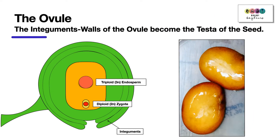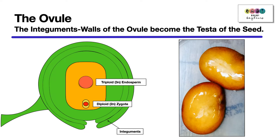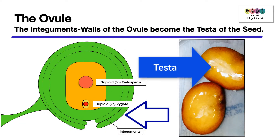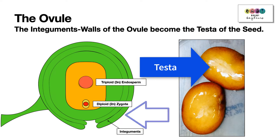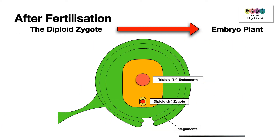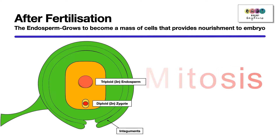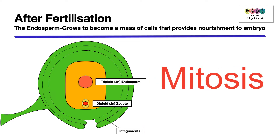Seeds have an outer coating called the testa, and it's the ovule walls — the integuments — that become the testa of the seed. You can see these seeds in the picture; they have a brown testa. The diploid zygote formed from the first fertilization undergoes mitosis to produce the embryo plant. The triploid endosperm eventually grows to become a mass of cells that provides nourishment to the embryo.